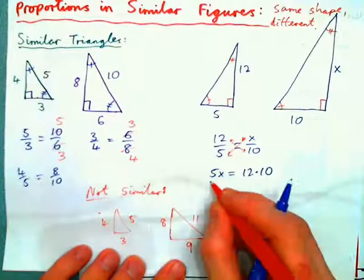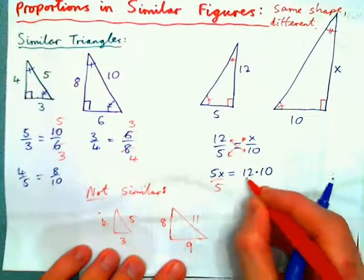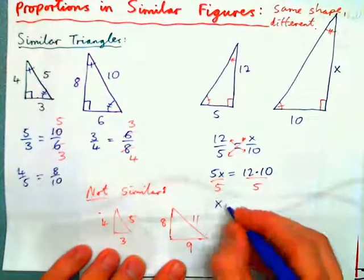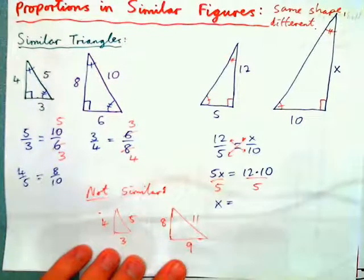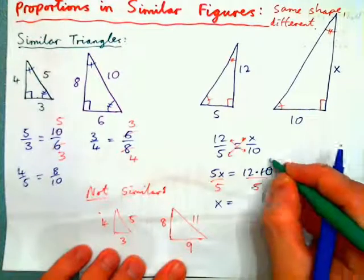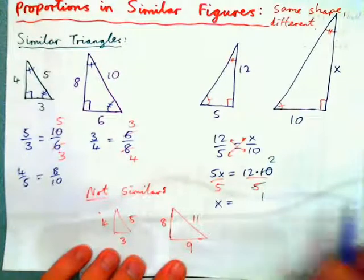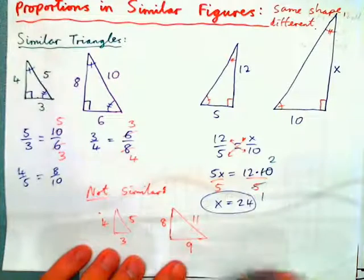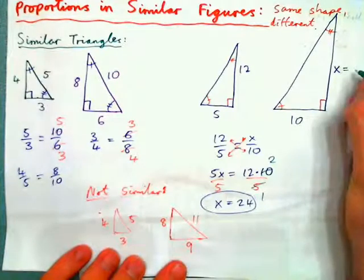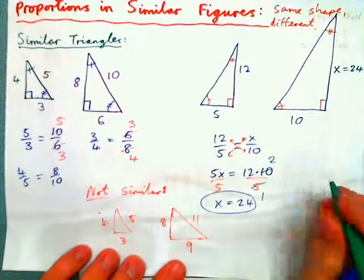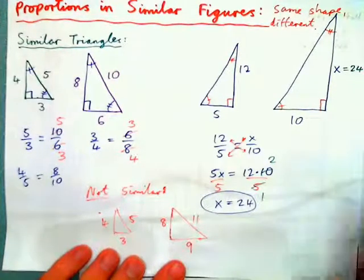Then just divide both sides by 5. 5 into 10 goes twice, and 12 times 2 is 24. So the length of this side would be 24.